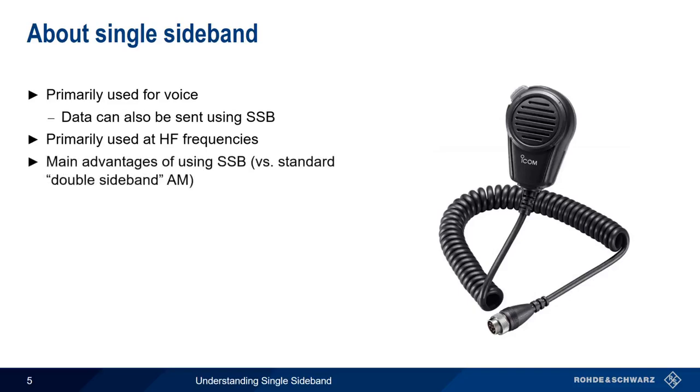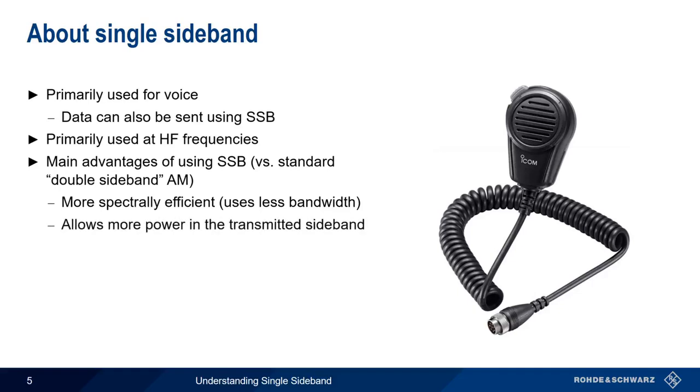Single sideband offers several advantages compared to standard or double sideband AM. Sideband is more spectrally efficient, that is, it uses less bandwidth, since we're eliminating approximately half of the signal. Using single sideband also allows us to put all of our power into one sideband, and not waste power transmitting the carrier and the other redundant sideband. There's also a reduction in the received noise due to a reduction in the bandwidth of the received signal.